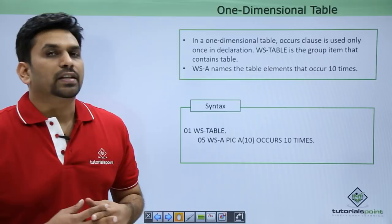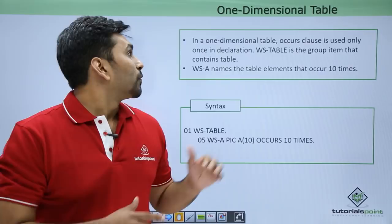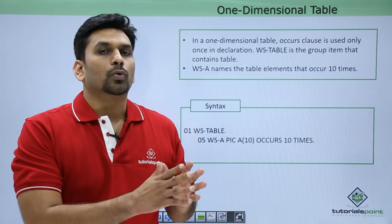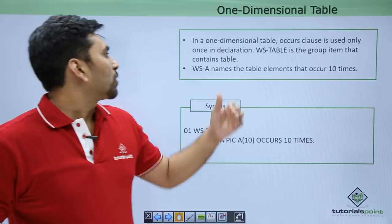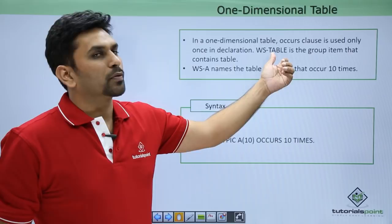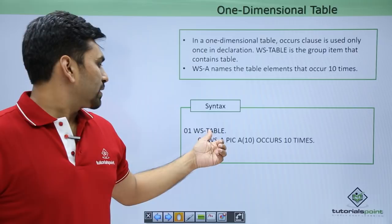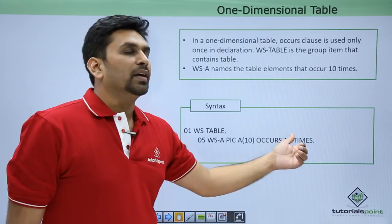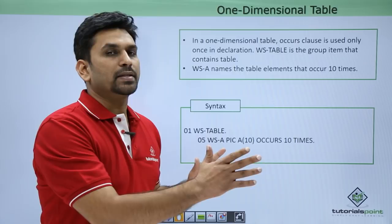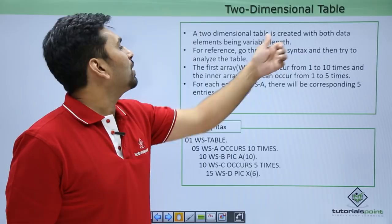In a 1D table, the OCCURS clause is used only once in the declaration. WS-TABLE is the group table item which contains the table. Here you can see WS-TABLE is a group table, and inside it we have WS-A which occurs 10 times. So the value of A will be stored 10 times — there will be 10 occurrences.